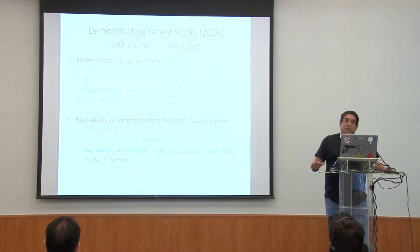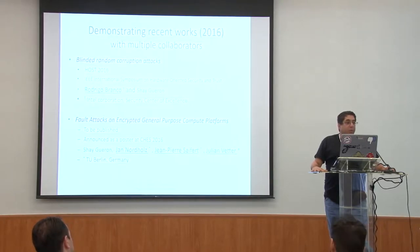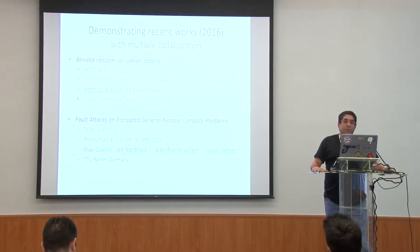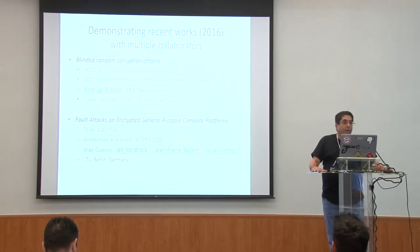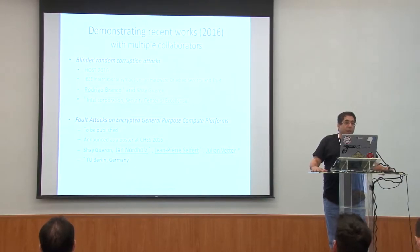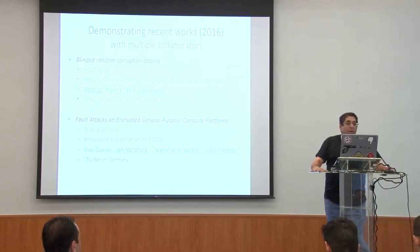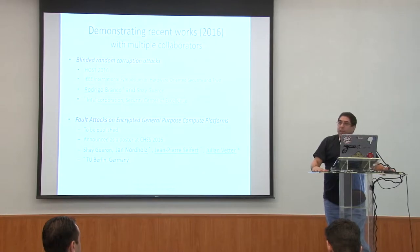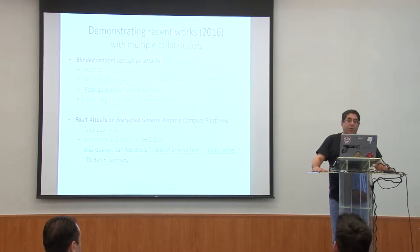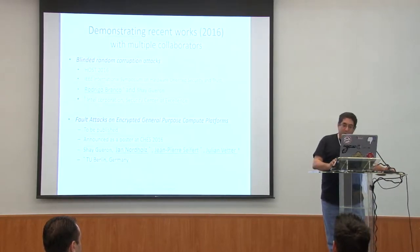We are going to discuss some demonstrations — all of them are very recent. I would like to mention my collaborators. There is a paper we presented at HOST 2016 called Blinded Random Corruption Attacks, a joint work with Rodrigo and myself. And another work around mid-2016: Fault Attacks on Encrypted General Purpose Compute Platforms, published as a poster at CHES — with Jan, Jean-Pierre Seifert, Julian Wetter, and myself.